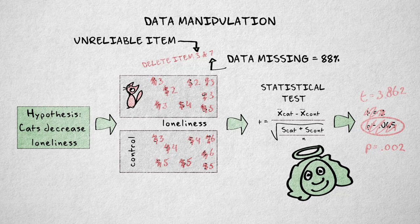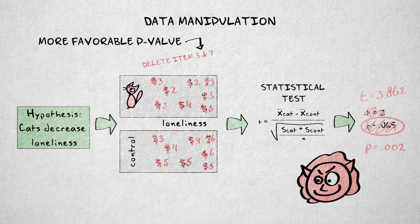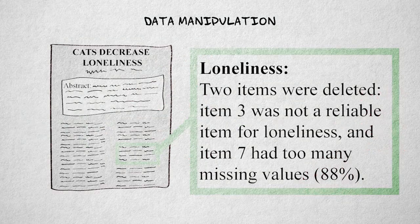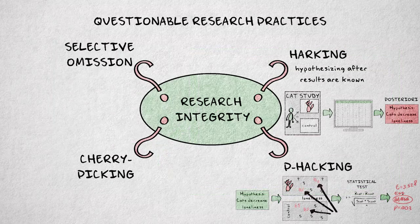However, sometimes these methods are employed just because they produce a more favorable p-value. The confirmation or rejection of the hypothesis thereby depends on arbitrary choices of data selection and manipulation. The golden rule of p-hacking is that as long as data selection and manipulation are reported and arguments are provided, the reader can judge for himself whether these choices are justified. P-hacking becomes a serious problem when the data massaging is not or incompletely reported.